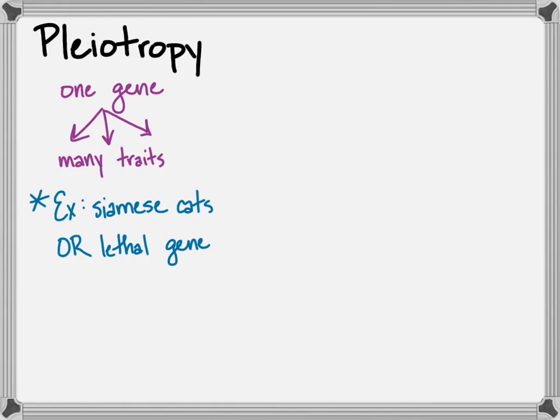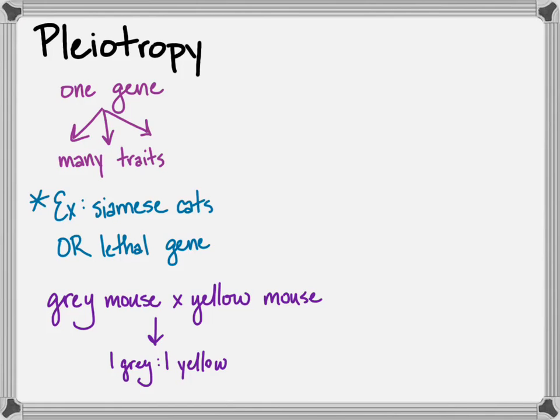And so, how did we come about understanding pleiotropy? Well, one of the early experiments involved a gray mouse that they knew was a pure-breeding mouse. It had come from a lineage of gray mice. And they crossed that with the yellow mice, and they found a one-to-one ratio of gray to yellow.